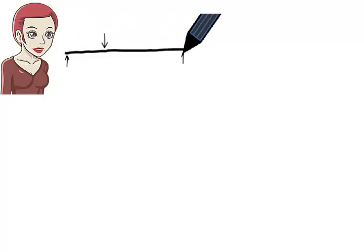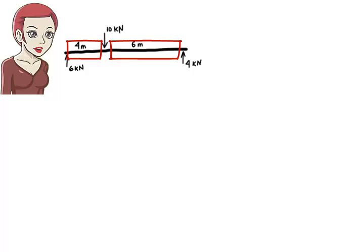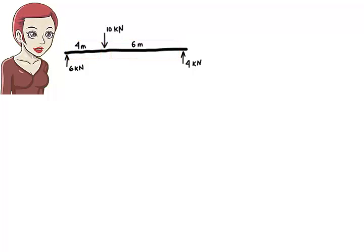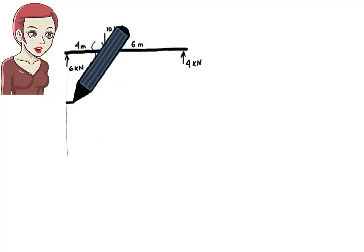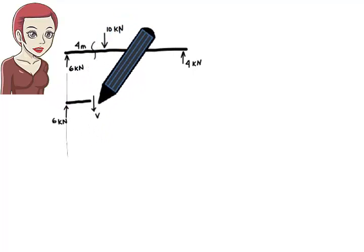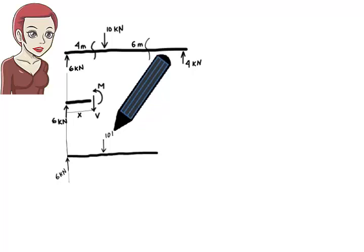Step 2: Determine the required number of shear and moment equations. Here, the load divides the beam into two segments. Therefore, we need two sets of equations — a shear and moment equation for the left segment of the beam, and another set of equations for the right segment. Step 3: Cut the beam in each segment, then draw the free body diagram of the left part of the beam. Here is the free body diagram when the beam is cut in segment AB, and here is the free body diagram when the beam is cut in segment BC.